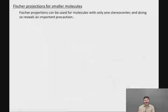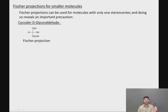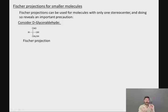Fischer projections can also be used for smaller molecules — in fact, we can use them for molecules with only one stereocenter, and doing so reveals an important precaution we have to take. Let's consider D-glyceraldehyde, our simplest sugar, a three-carbon sugar. In the Fischer projection, we're going to have the aldehyde at the top, the CH2OH at the bottom, and then on the central carbon the OH pointing to the right and the H pointing to the left. This is what we get from just taking carbons 1 through 3 off of the model of glucose.